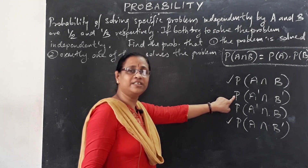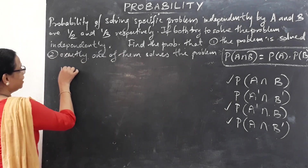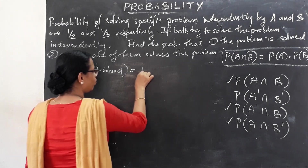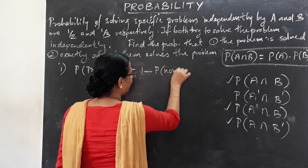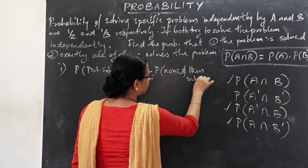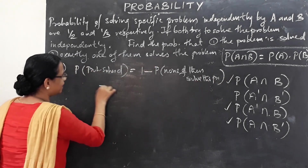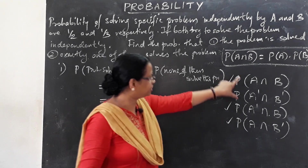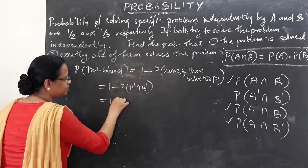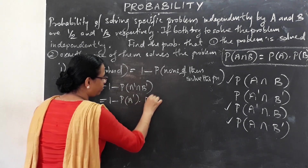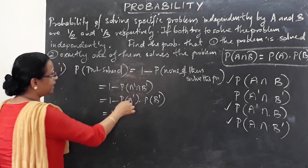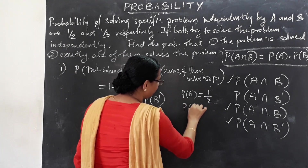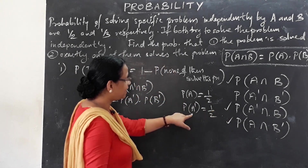For the first question, the probability that the problem is solved equals one minus the probability that none of them solve the problem. That is: 1 minus probability of A' intersection B'. Since A plus A' equals 1, we can find the complement probabilities.